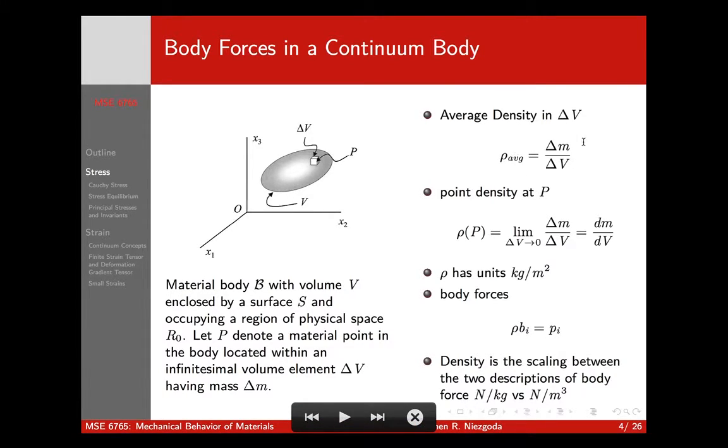We know what the density is. The density is the mass divided by the volume. As delta V goes to zero, we get a true differential. So, dM by dV is the point density. The conversion between the forces per unit mass and the forces per unit volume is just the local density. Our density is our scaling relationship between the two descriptions of body forces. We don't need to worry much about body forces. We're going to be talking about mostly mechanical forces and mechanical interactions.